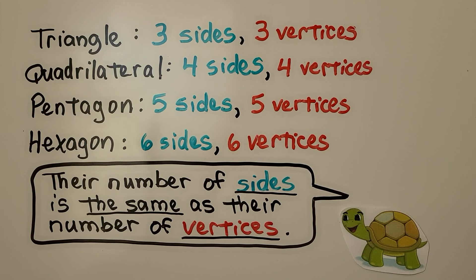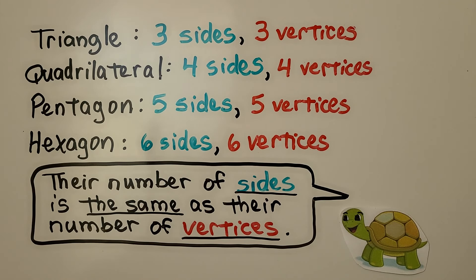A quadrilateral has four sides and four vertices. A pentagon has five sides and five vertices. And a hexagon has six sides and six vertices. Did you notice their number of sides is the same as their number of vertices?